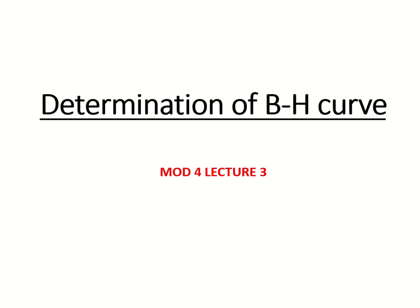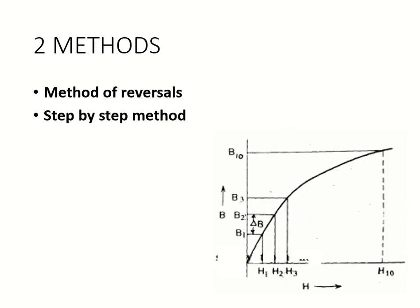Welcome dear students. This is lecture 3 of module 4, which is the determination of the BH curve. B is magnetic flux density, H is magnetic field intensity. There are mainly two methods for finding the BH curve: one is the method of reversal and the second one is the step-by-step method. This is the approximate figure or graph of a BH curve.